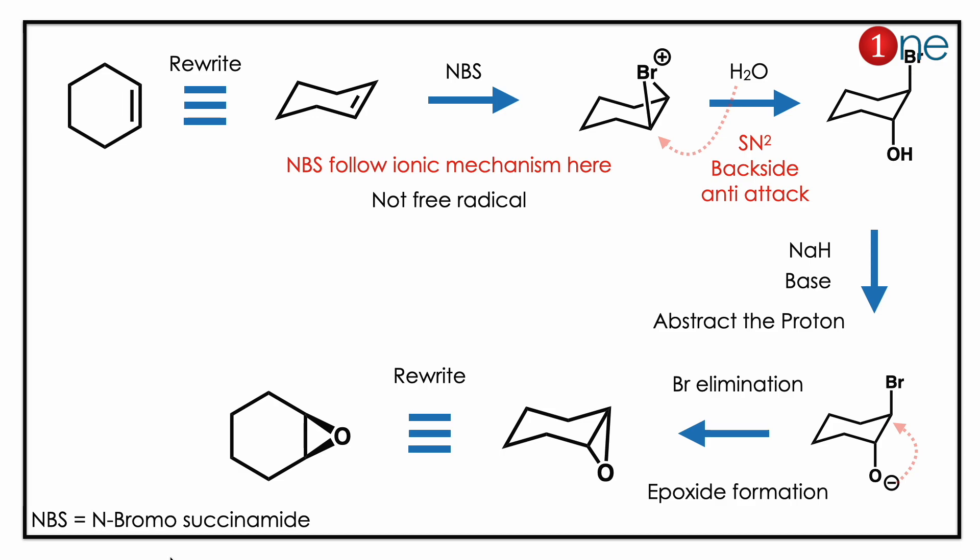Bromine is a good leaving group, so you get an epoxide. So the final product is cyclohexene epoxide. The key concept to learn here is that N-bromosuccinimide (NBS) also involves an ionic mechanism.